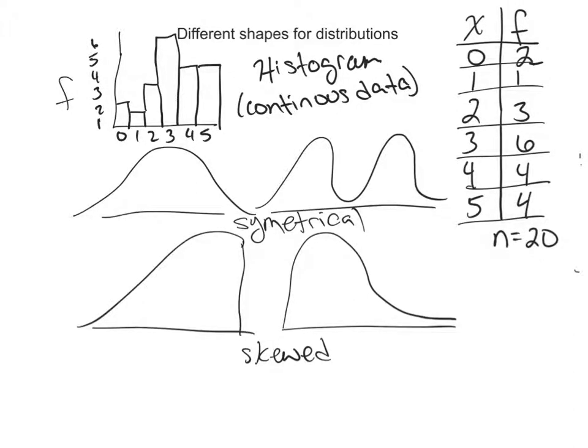Rather than drawing a complete frequency distribution graph every single time you want to display data, researchers usually describe a distribution by listing its characteristics. These characteristics can be described in any distribution, like the shape, the central tendency, and variability.